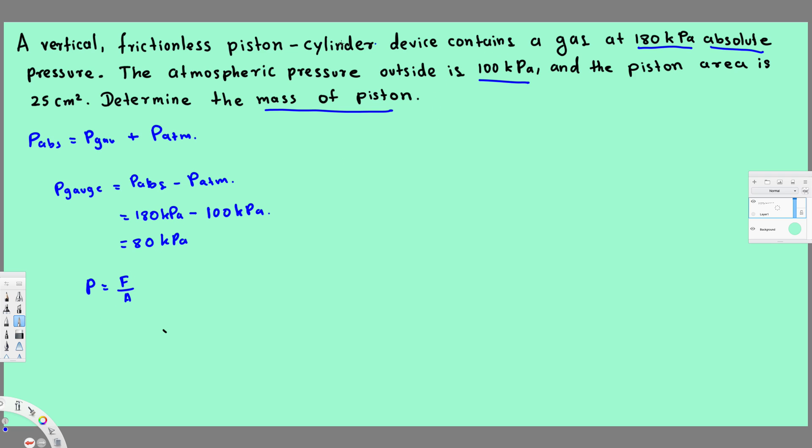So here let's find the force. We know the area already, that's provided right here: 25 centimeter square. So F is equal to P times A. Let's calculate that. Pressure we calculated is 80 kilopascal. Let's convert this one into Pascal: 80 times 10 to the power of 3.